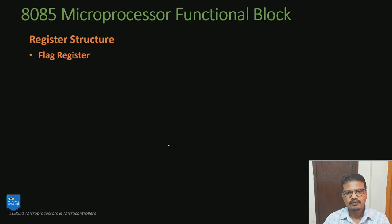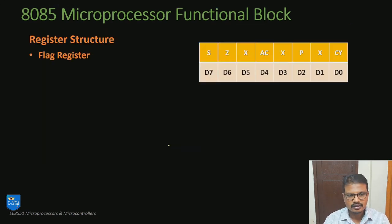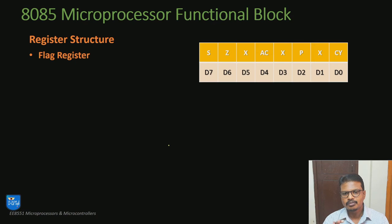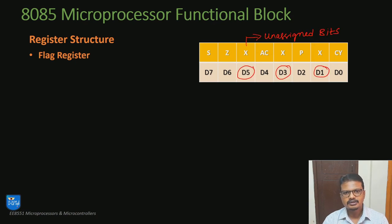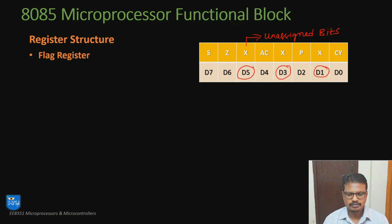Next is the flag register. The flag register is an 8-bit register, of which 5 bits are used by the microprocessor. In this flag register, bits D5, D3, and D1 are unassigned bits, so they cannot be used either internally by the processor or externally by the programmer.